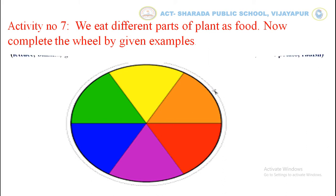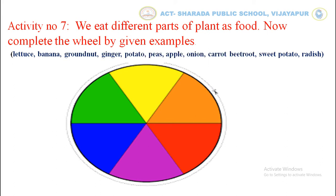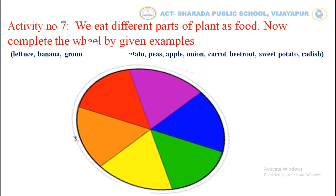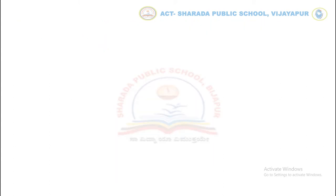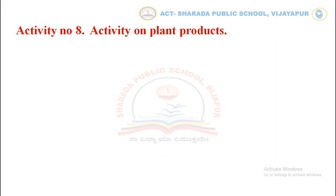The parts we eat as food include: lettuce, banana, groundnut, ginger, potato, peas, apple, onion, carrot, beetroot, sweet potato, and radish. One has been done for you — stem as food, that is pechato.